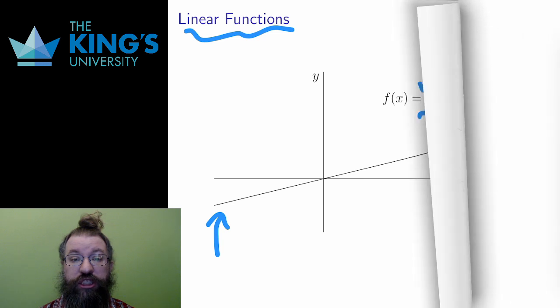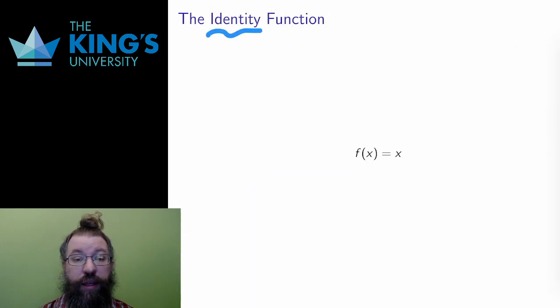One very important linear function is the identity function. This is the function that gives the input back unaltered. Whatever you put into this machine is just returned. f of 3 equals 3, f of 100 equals 100, the same for any input.